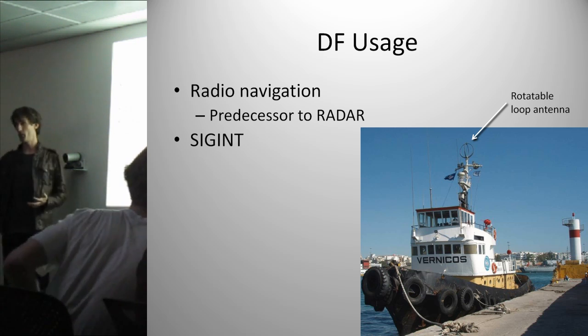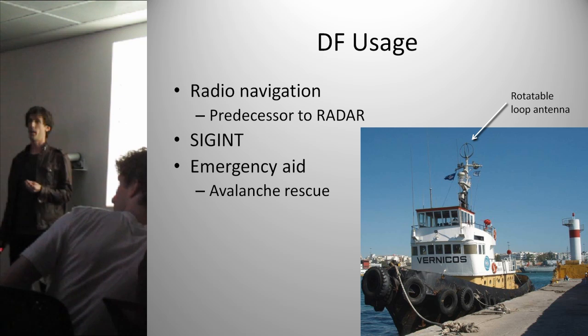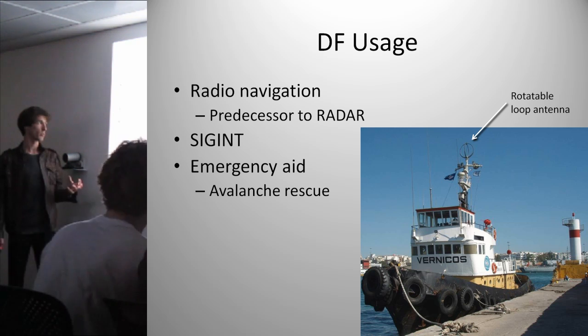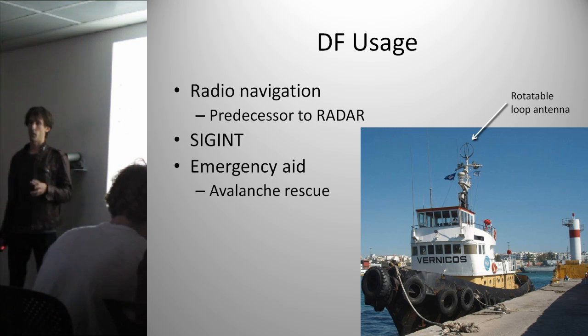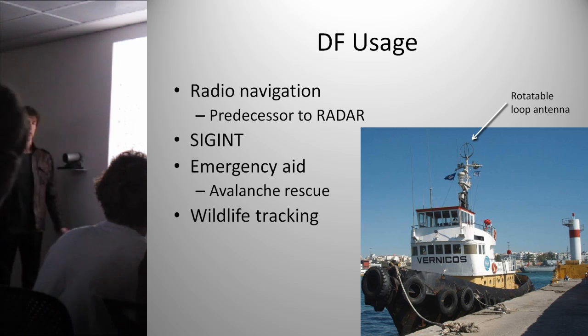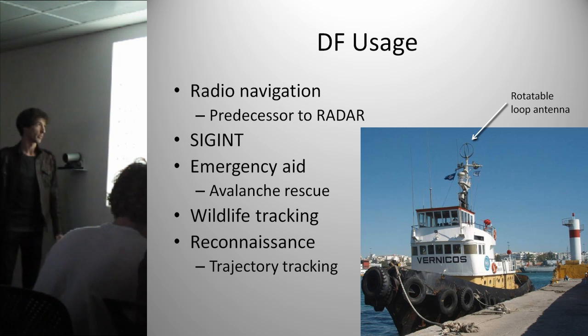Signals intelligence, emergency aid - in avalanches people might have radio beacons, they can use this technology and track down people in the snow. They attach beacons to wildlife, same sort of deal, and the reconnaissance tracking of rockets, trajectories, etc. And it's also a sport, believe it or not.